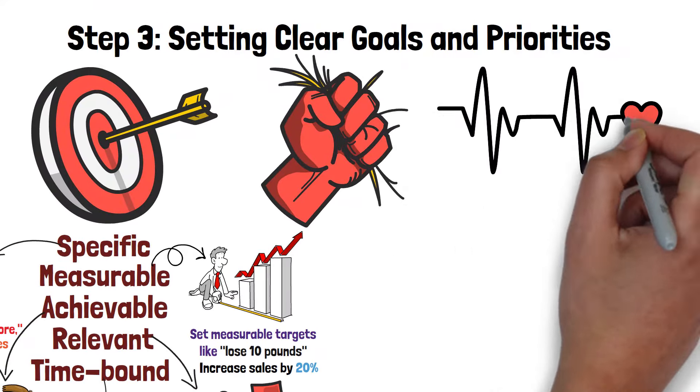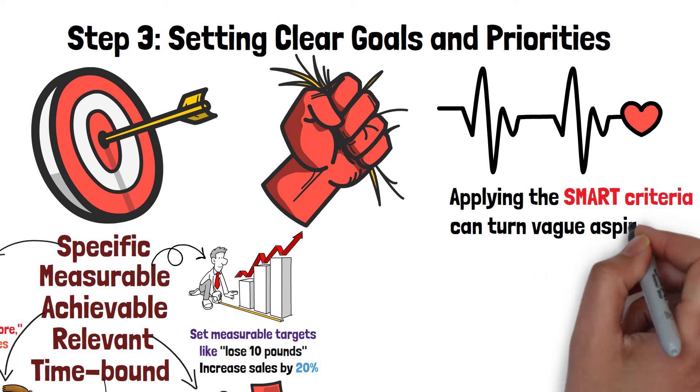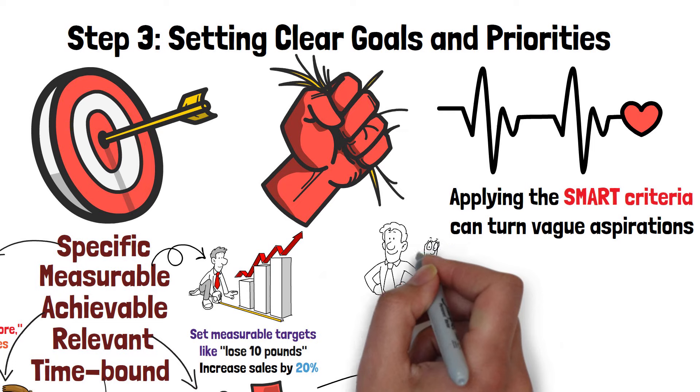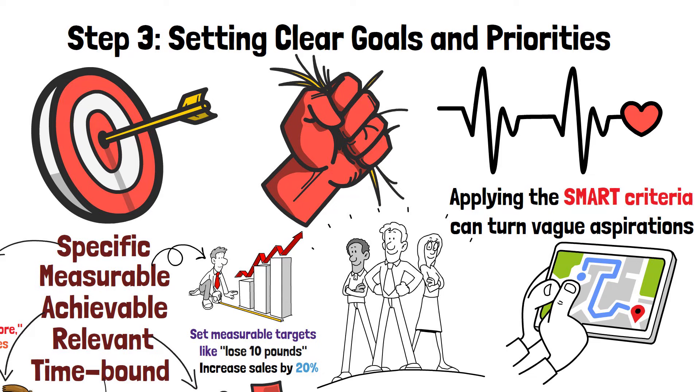Whether it's advancing in your career, improving your health, or mastering a new skill, applying the SMART criteria can turn vague aspirations into actionable plans for success. Setting clear goals isn't just about what you want to achieve. It's about creating a roadmap to get there.